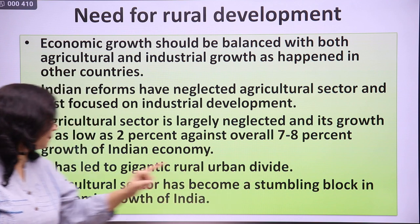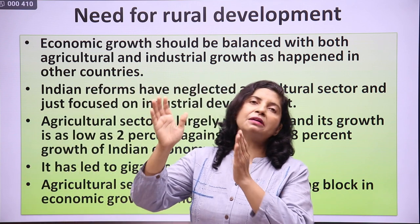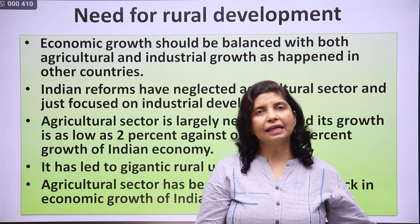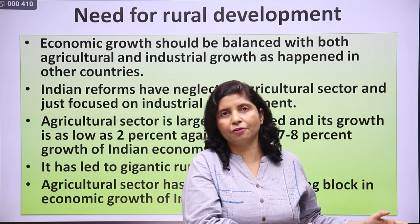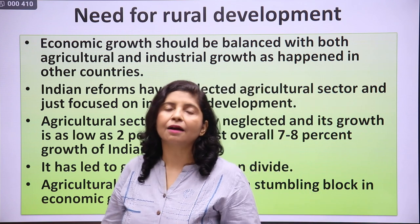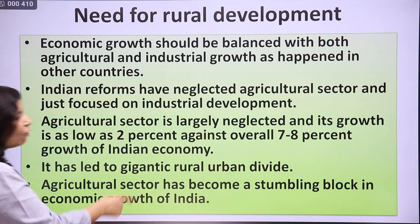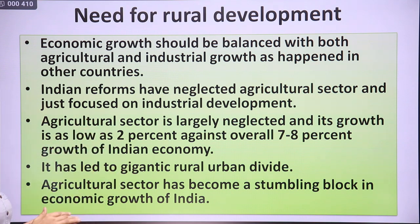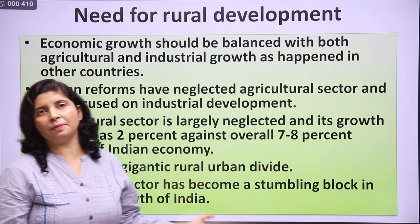Agriculture has become a stumbling block in India's economic growth. To use an analogy: if in a family one person becomes a scientist earning huge amounts, but another is just living hand to mouth, you can't grow fully — the whole family lags behind economically. Similarly, India's agricultural sector and industrial sector should grow alongside each other at equal rates. Otherwise, agriculture will remain a hurdle in the overall development of India.